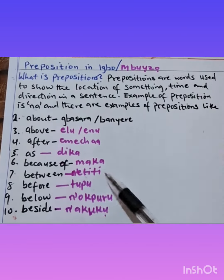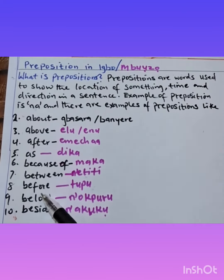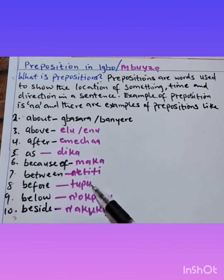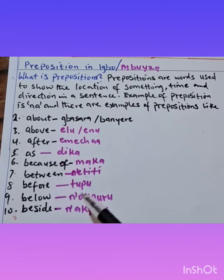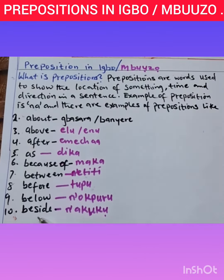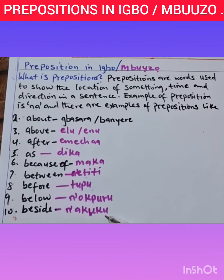Between — 'netiti'. Before — 'tupu'. Below — 'nokuru'. Besides — 'nakoko'.